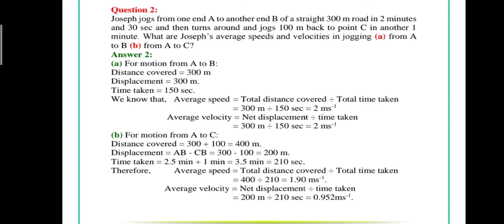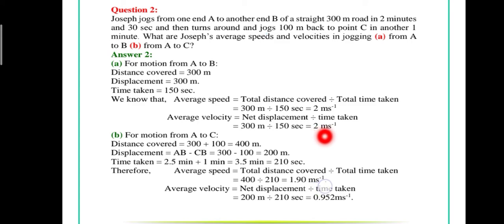First we calculate from A to B. Distance covered is 300 meters, displacement is 300 meters, and time taken is 150 seconds. Average speed equals total distance divided by total time: 300 divided by 150 equals 2 meters per second. Average velocity equals net displacement divided by time: 300 divided by 150 equals 2 meters per second.